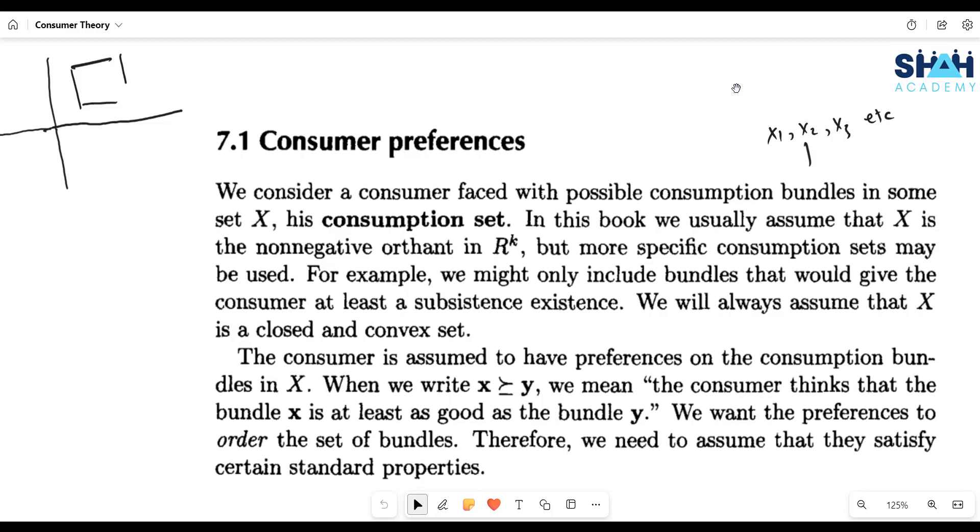The consumption cannot be negative. That's why the consumption set X is non-negative orthant in the k-dimensional space. These are the positive dimensions. So this is zero, this positive amount of X and it's the positive area of Y. Right? So all the consumption bundles will be reported in this very area.